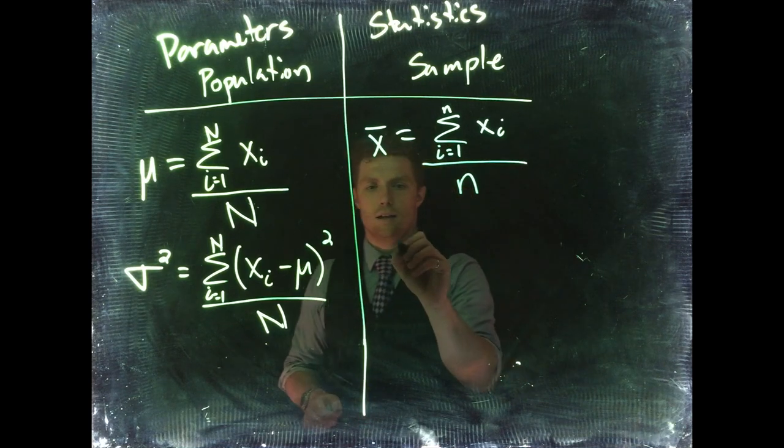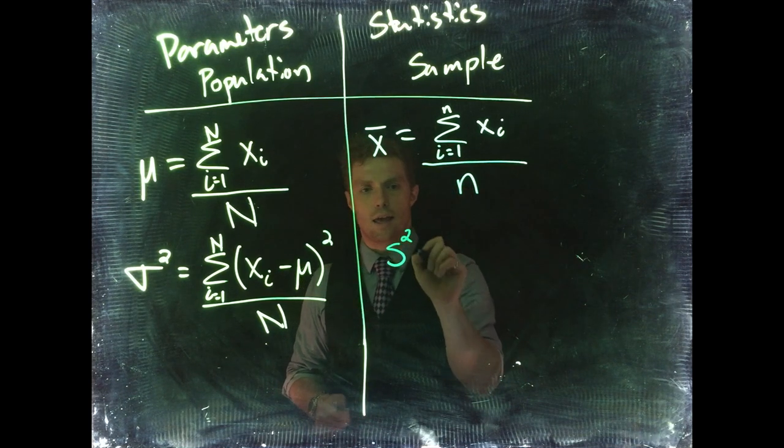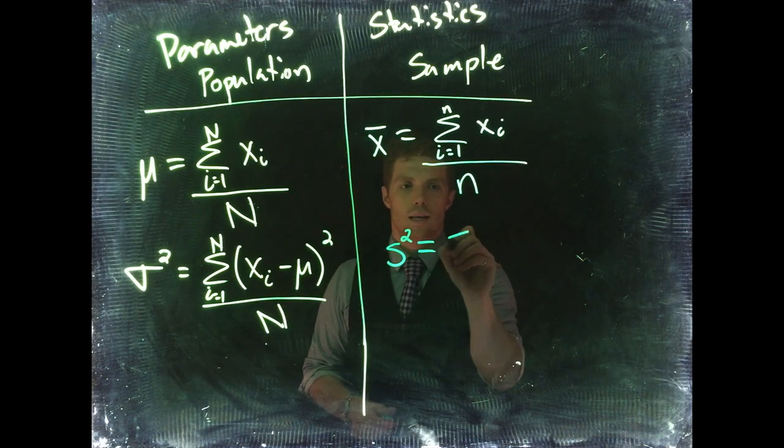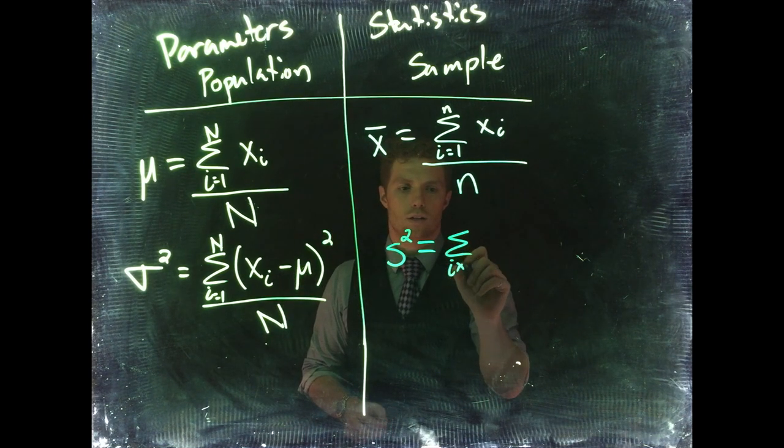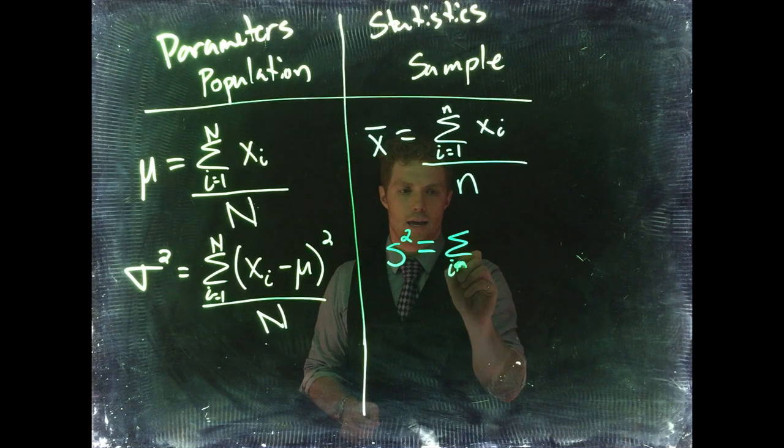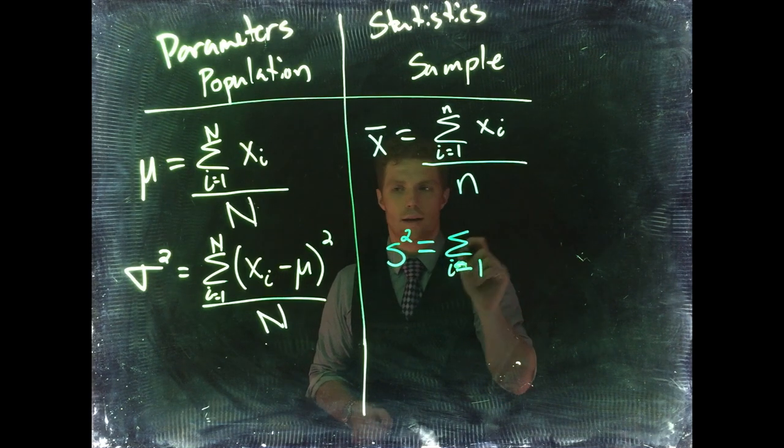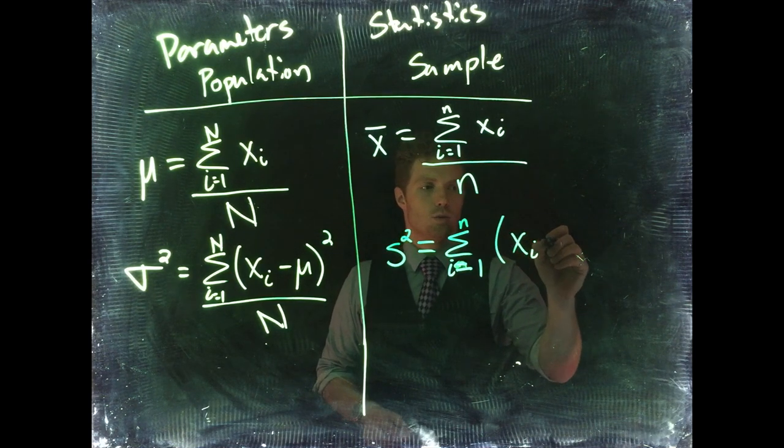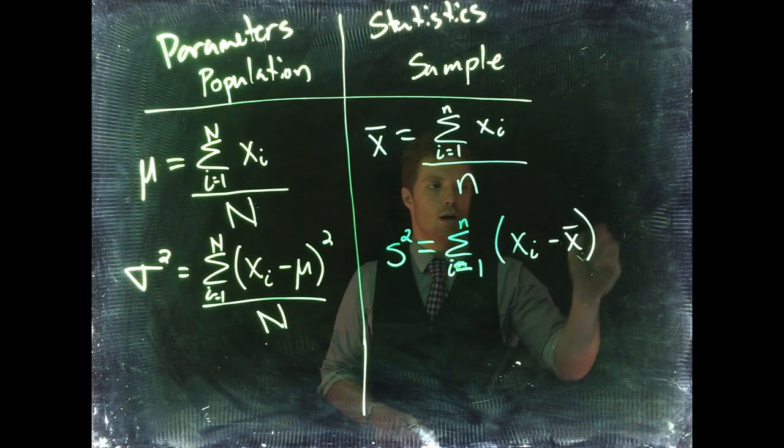If we look at it on the sample end, our statistic end, we use s squared (s²). And it looks similar - it's still our summation from i equals 1 to little n. But this time we don't know what mu is, so we're going to substitute in x bar, still squared.